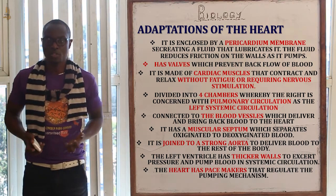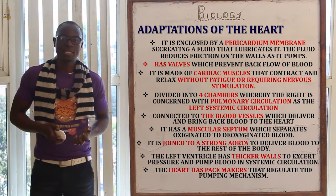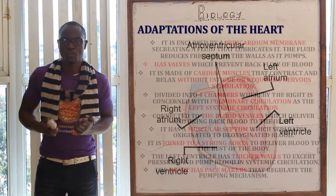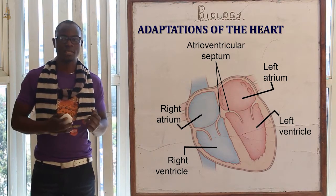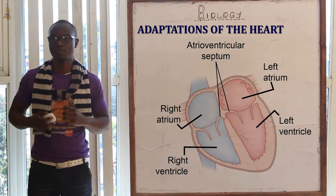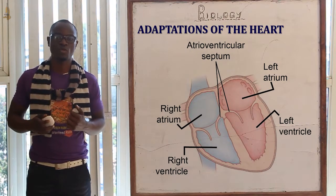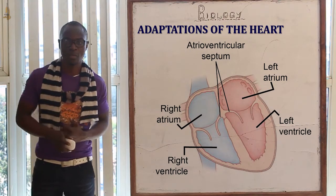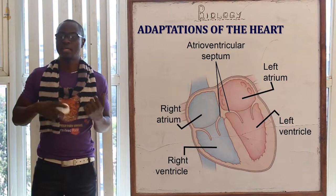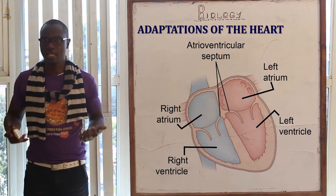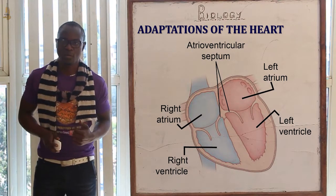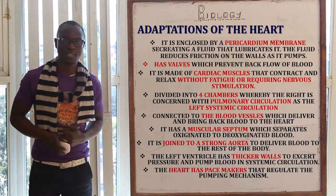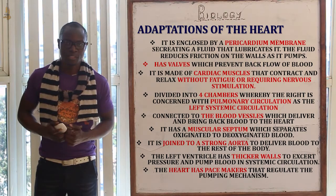The heart is also divided into four chambers, whereby the right side is mainly concerned with pulmonary circulation while the left side is mainly concerned with systemic circulation, as we had seen in previous classes.